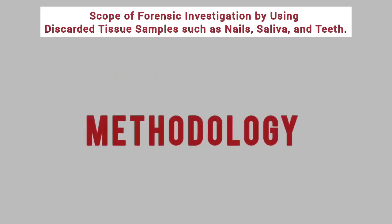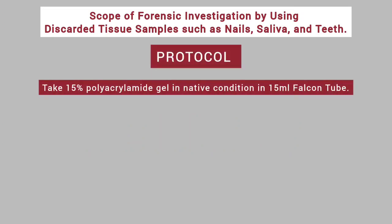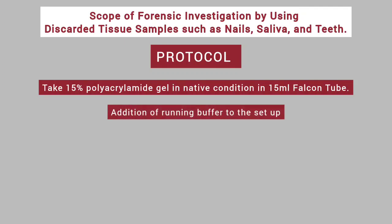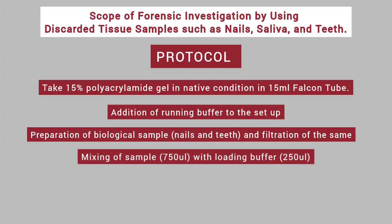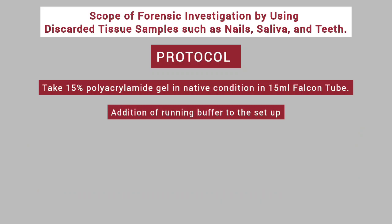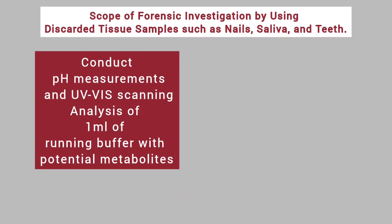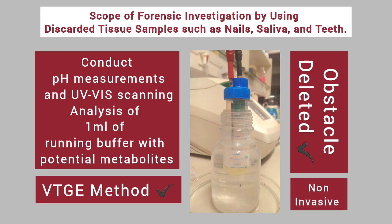Coming to the methodology of carrying out the VTGE process, the protocol involves preparation of 15% polyacrylamide gel in native condition in a 15 ml falcon tube. Further, running buffer is added to the setup after preparation and filtration of the biological sample. We mix it with loading buffer and carry out an electrophoresis run. Collection of running buffer is done at the end of the process and pH measurements are carried out via UV scanning. Subsequently, analysis of running buffer with potential metabolites is carried out. The toxicology tests incorporating VTGE through metabolite analysis in nail and teeth samples of the victim will enable medical examiners to take the investigation to the next level, and the obstacle of visceral tissue analysis is successfully overcome through the non-invasive metabopsy process.